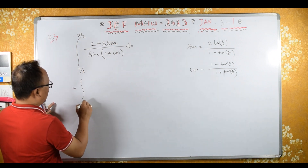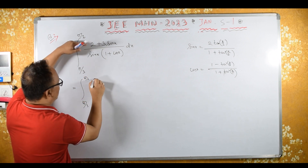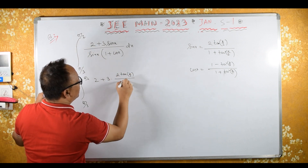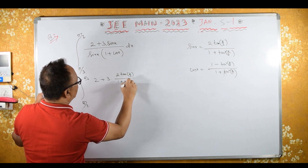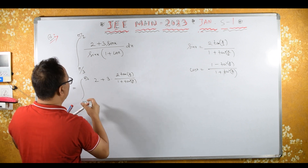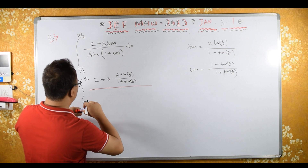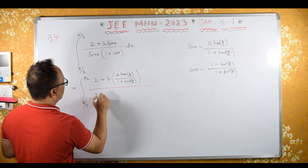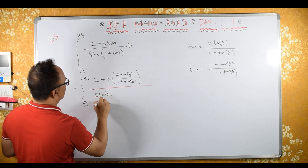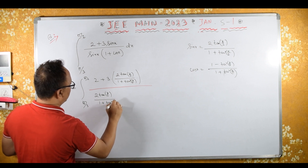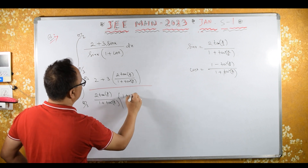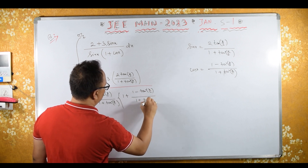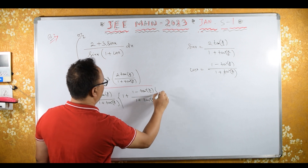This equals the integral from π/3 to π/2 of: 2 plus 3 sin x, where sin x is 2 tan(x/2) upon 1 plus tan²(x/2), and the denominator has 1 plus cos x, where cos x is 1 minus tan²(x/2) upon 1 plus tan²(x/2), all into dx.